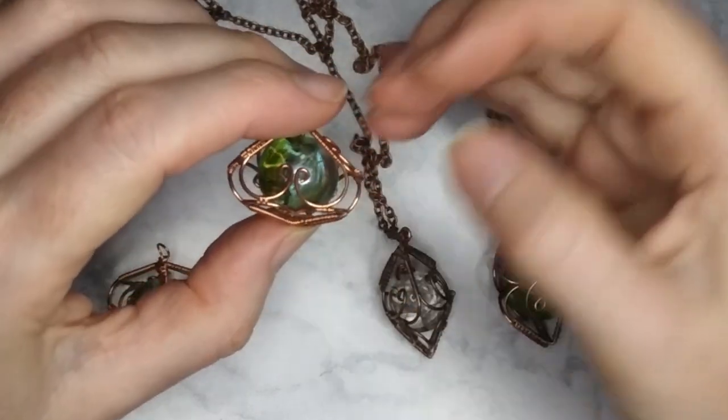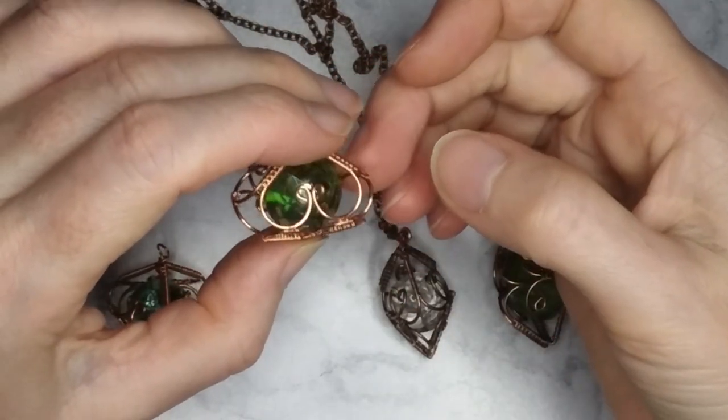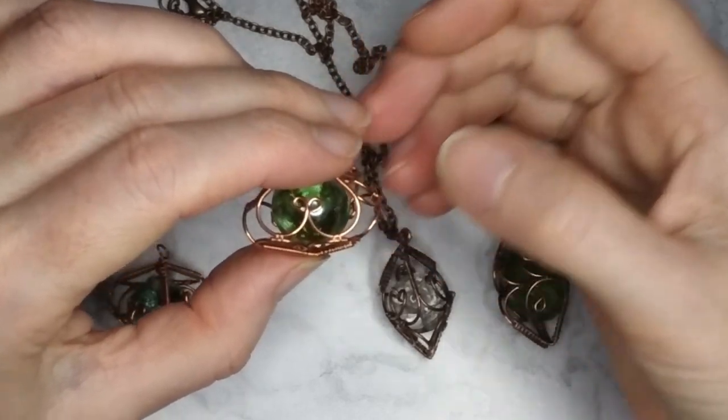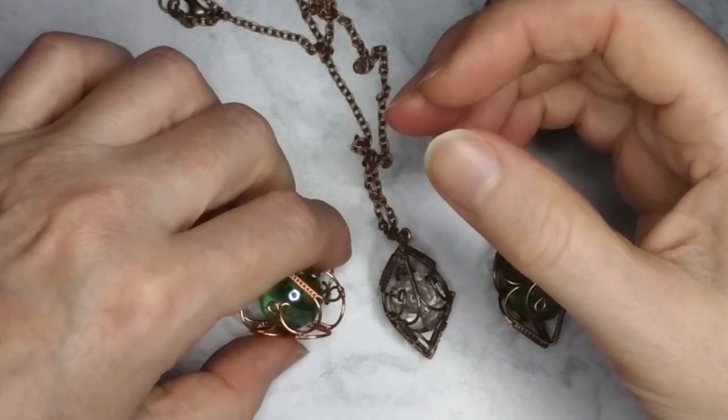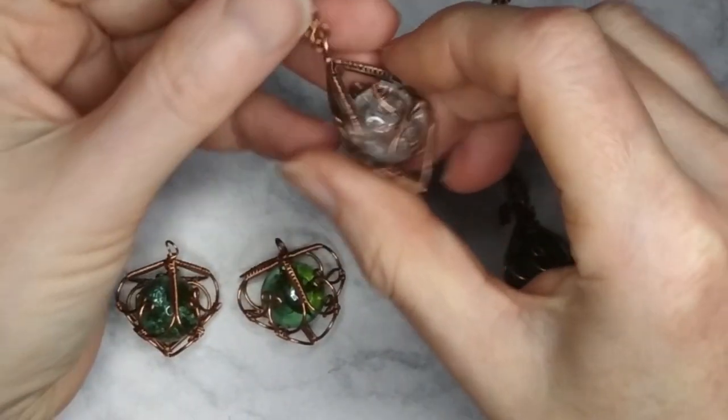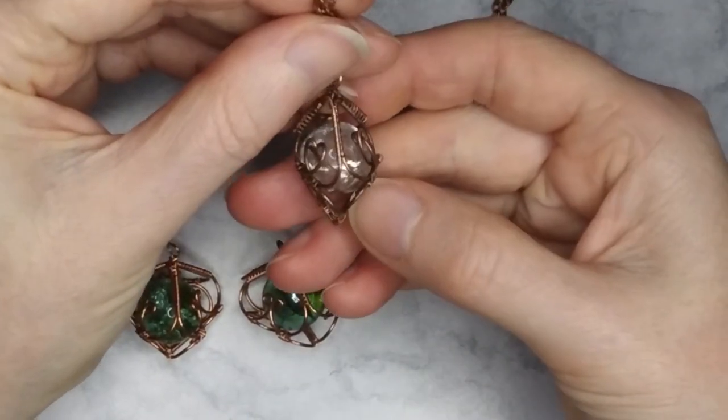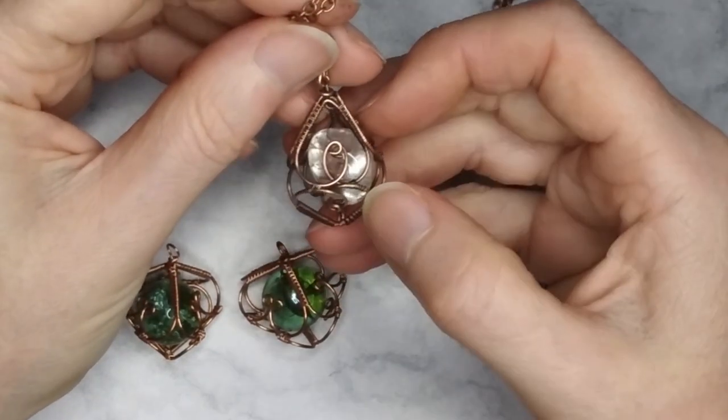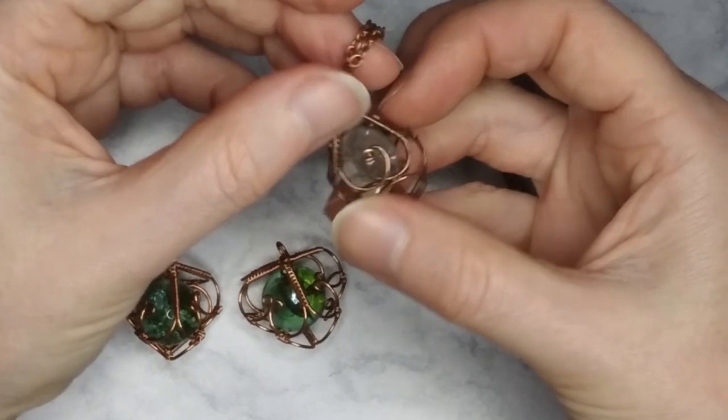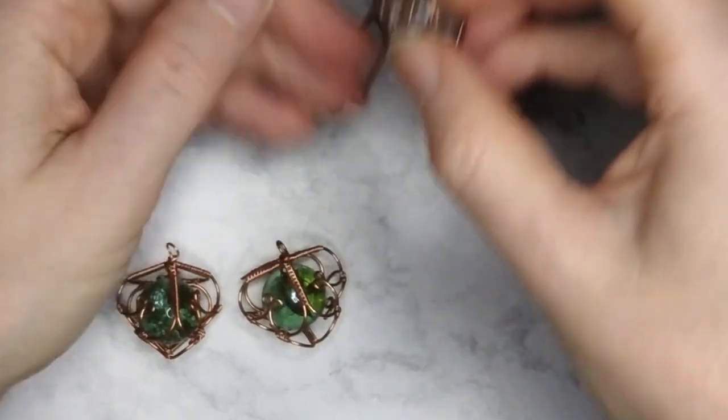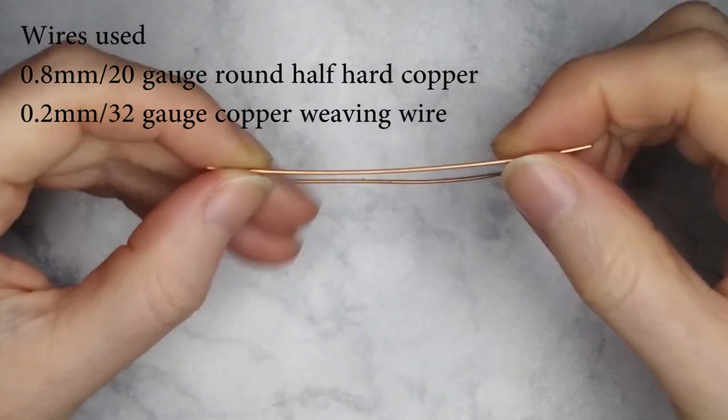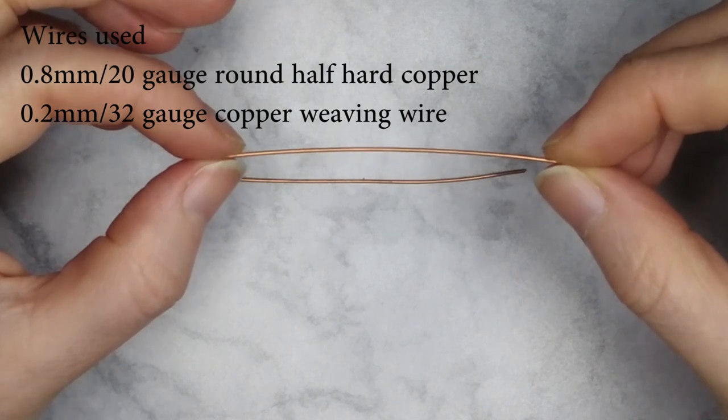In this video I will be demonstrating these sun catchers and adapting the design to create these gemstone cage pendants. Both designs will require 3 inch lengths of 0.8mm half hard wire.